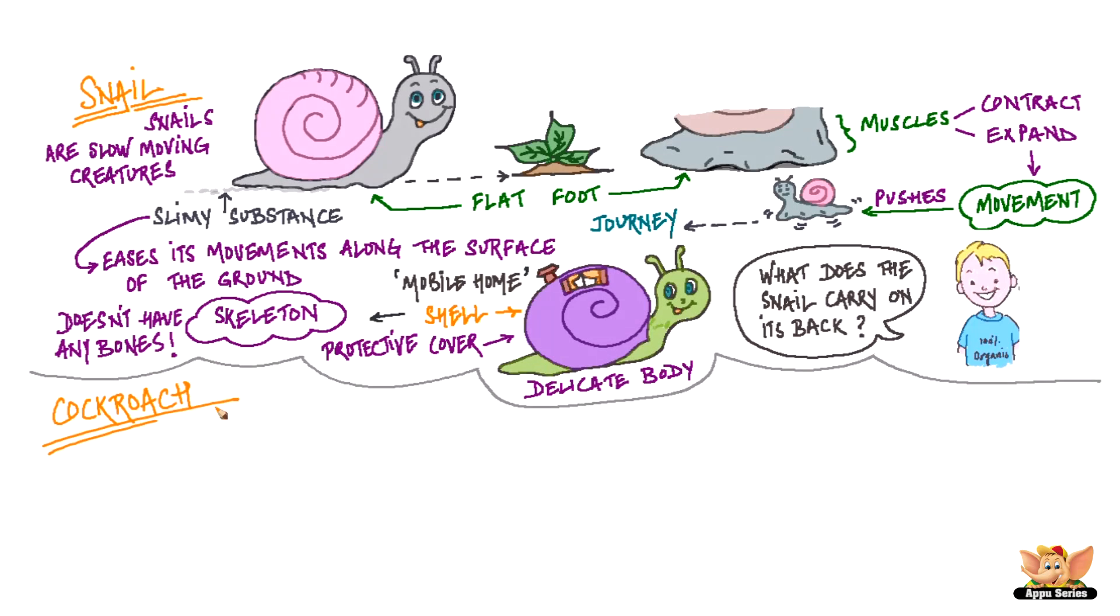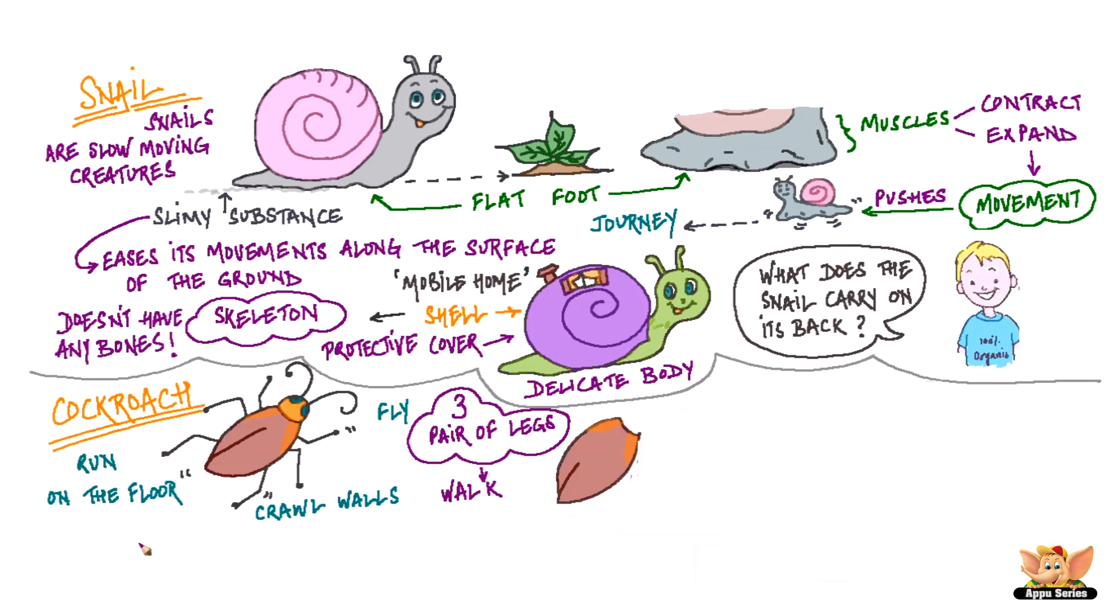Now let's talk about cockroaches. We have all seen cockroaches run on the floor, crawl walls and even fly. Now that's a huge variety of movement for a creature. Cockroaches have three pairs of legs that help them walk. They also have an outer skeleton that is not made of bones but some other substance called chitin. This outer skeleton helps them in their movement.